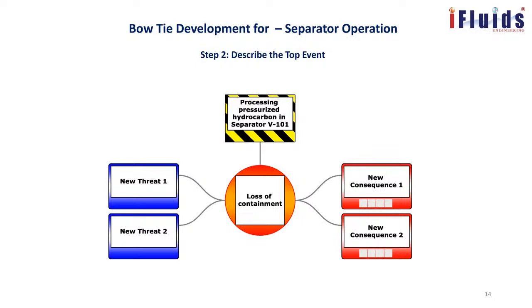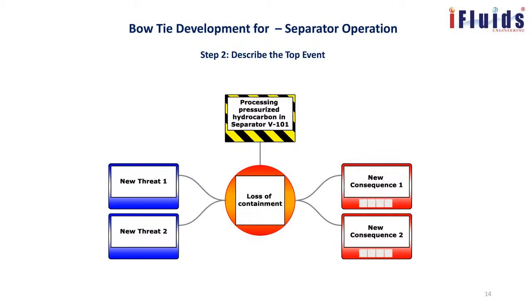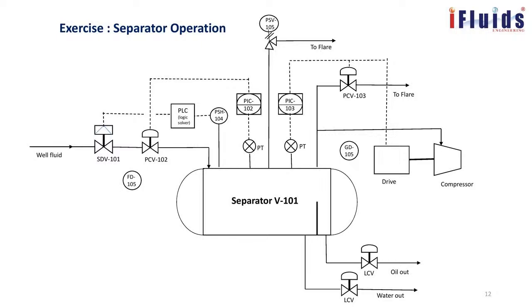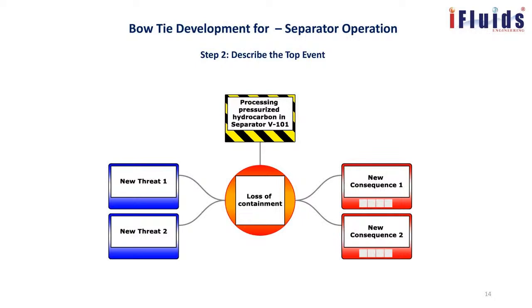The next step is describing the top event. In this case the top event is 'loss of containment.' The separator contains oil, gas, and water in a pressurized condition. As long as the fluid is contained within the separator there is no harm. But if for some reason a control fails and the separator leaks or bursts, the oil or gas which is inside comes out — that is called loss of containment, which is the top event.